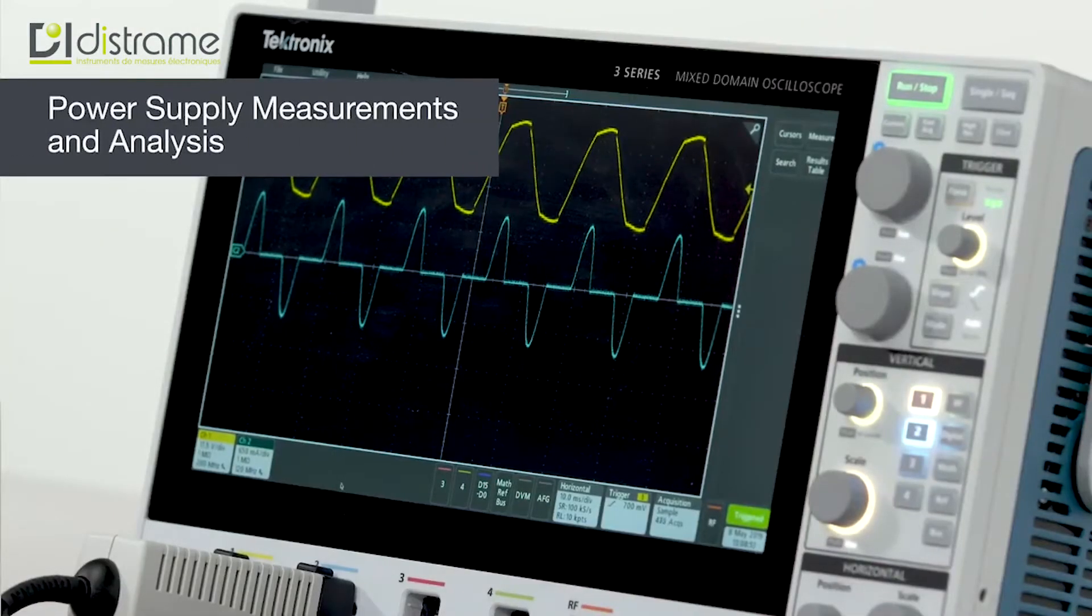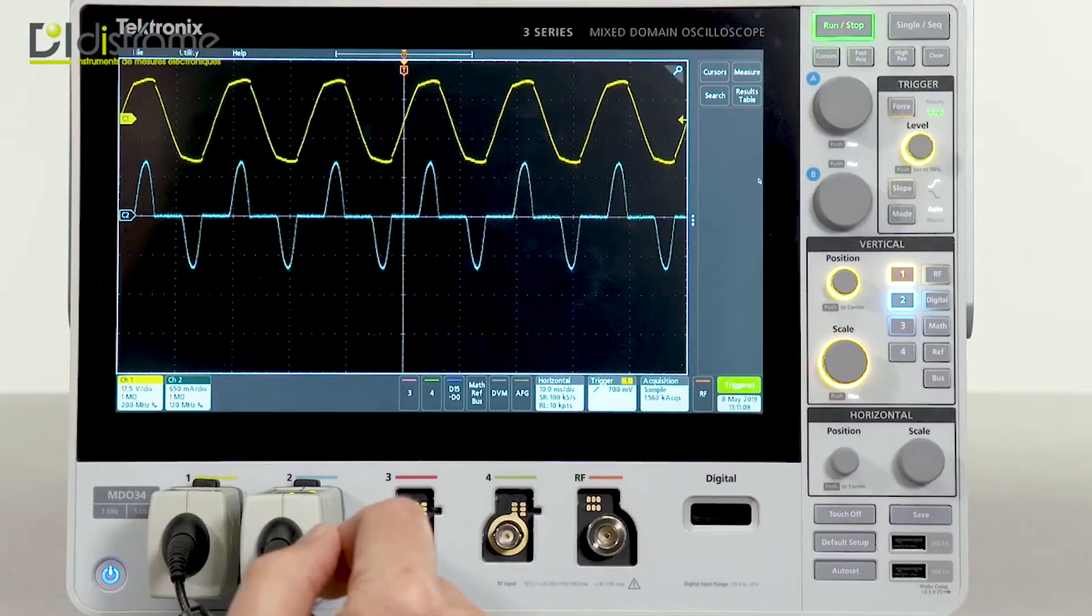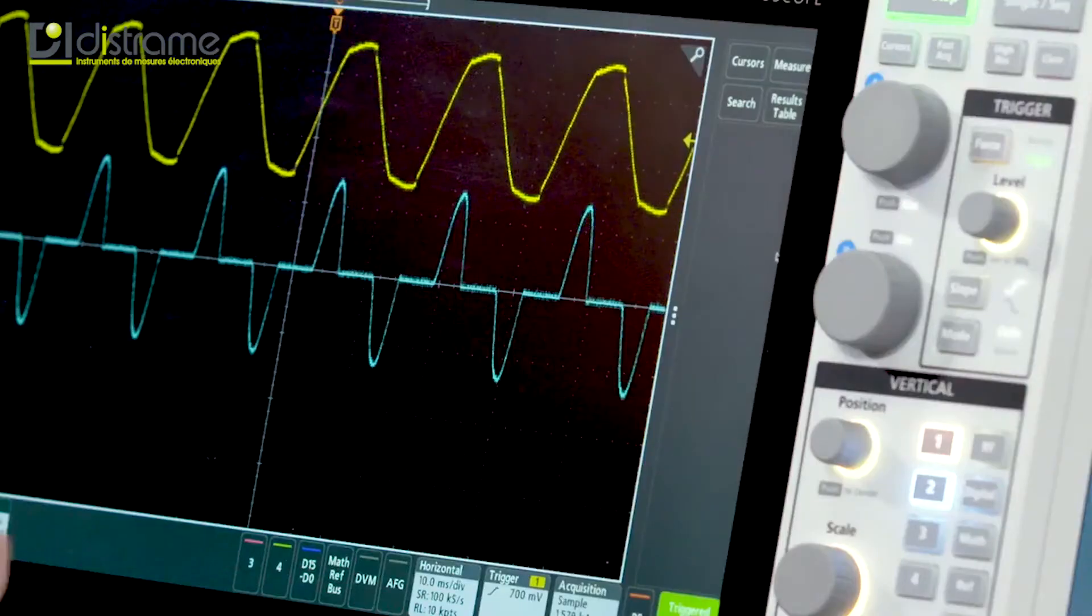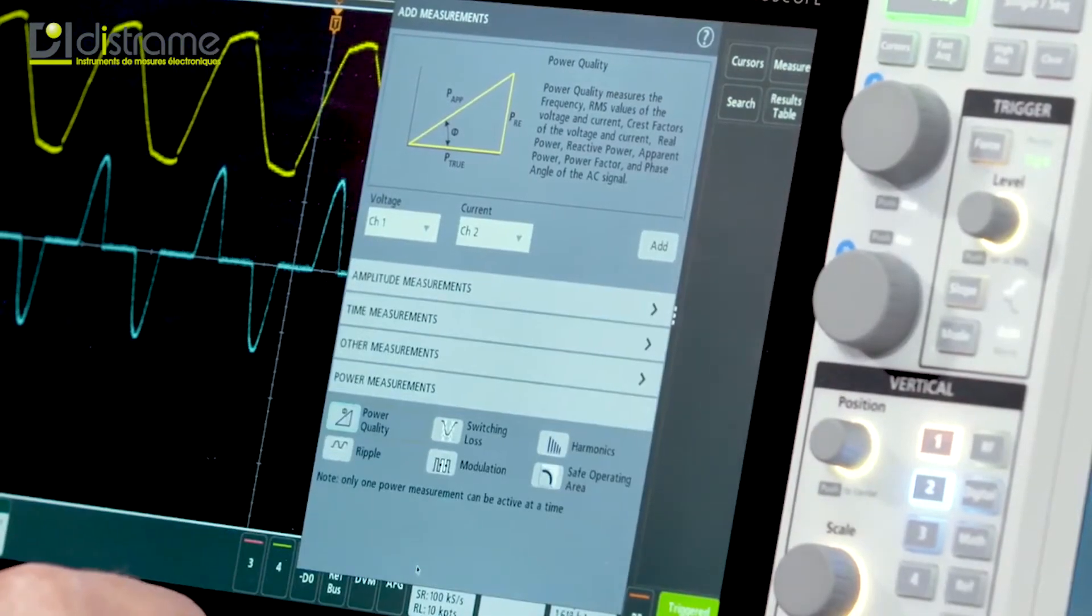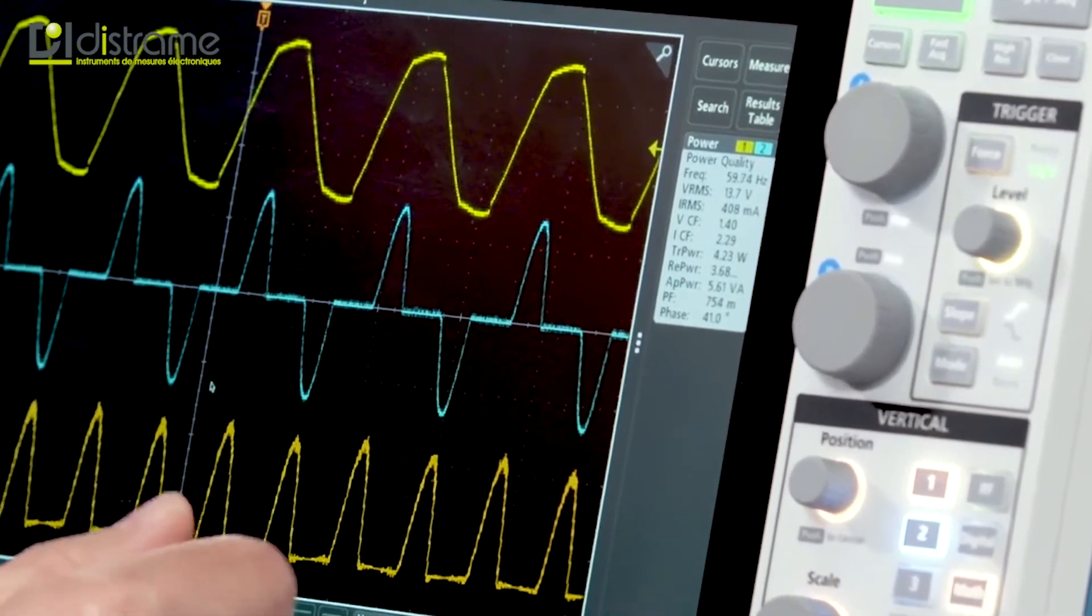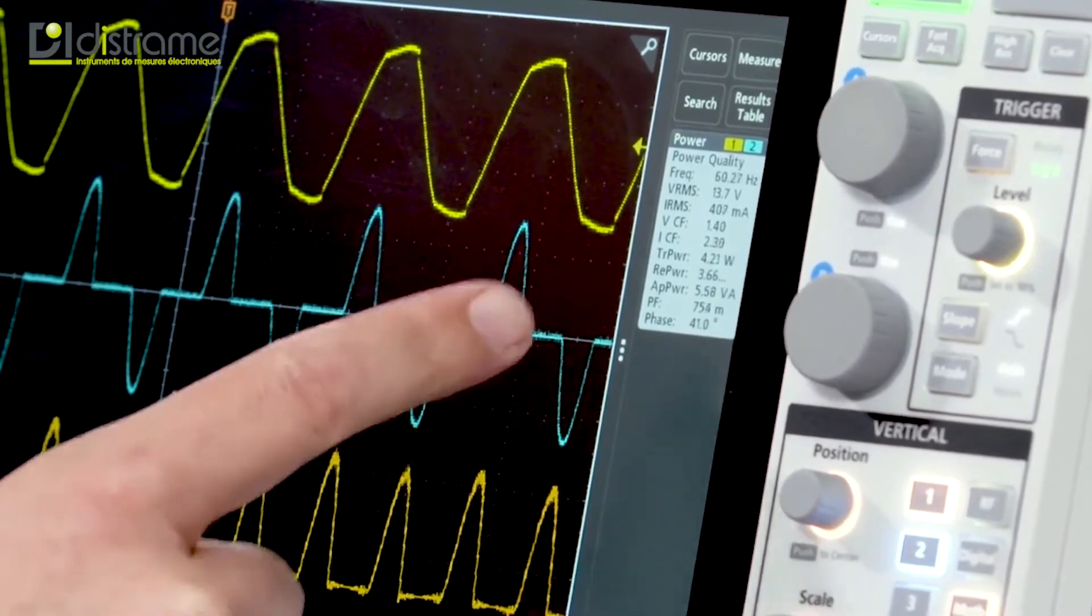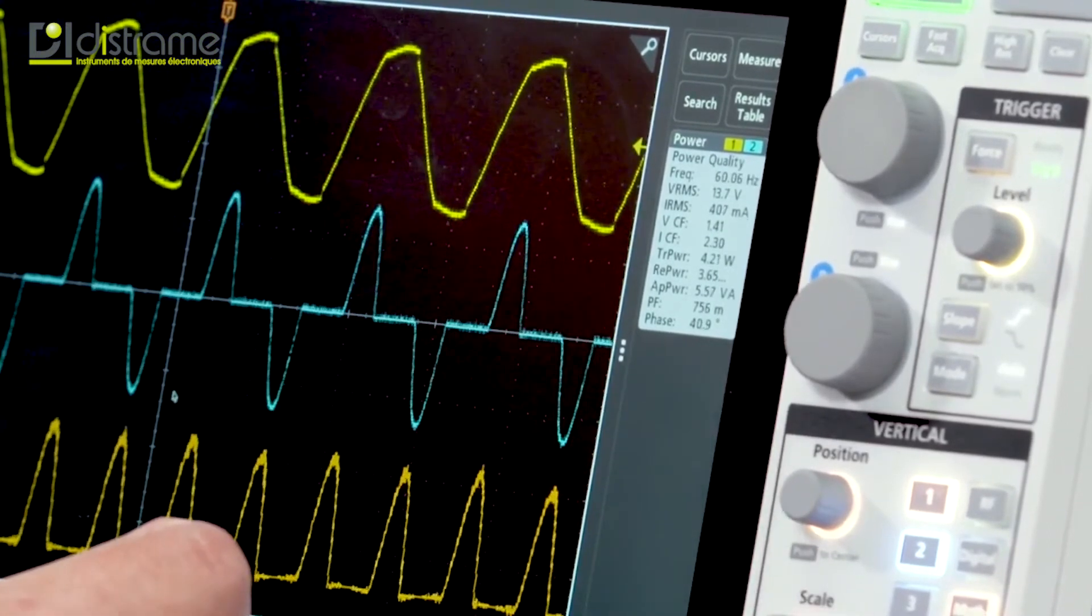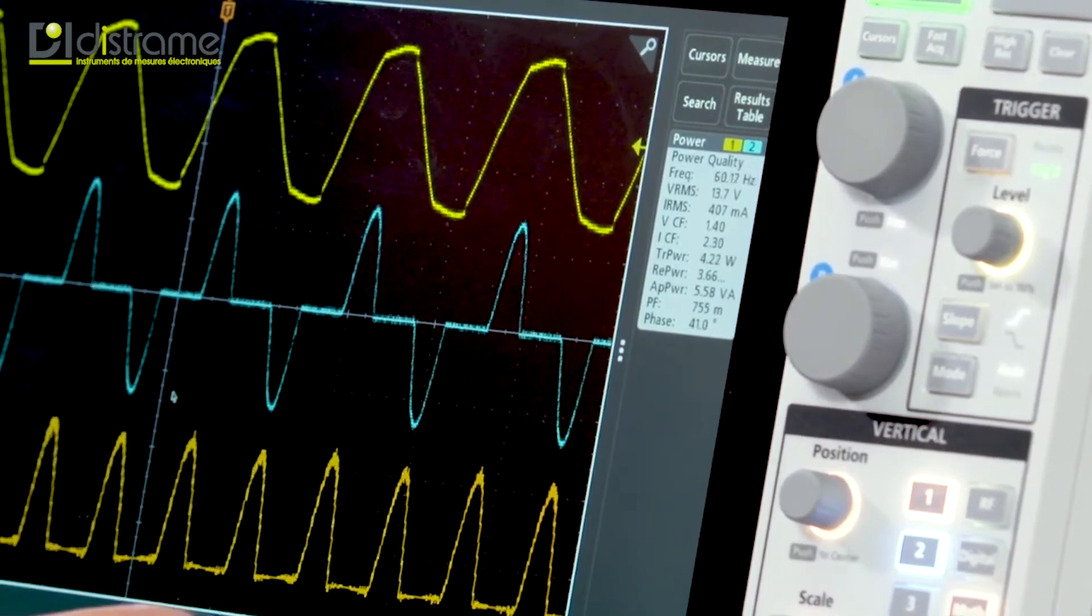With the optional power analysis package, it's easy to make end-to-end power supply measurements. Making power measurements is just as easy as regular measurements. To do so, go to the measure menu, select the power measurements panel, and in this case we want to look at power quality. Once we've selected it, you'll see we get a new badge in the results bar, indicating things like true power, reactive power, apparent power, and many other useful pieces of information.